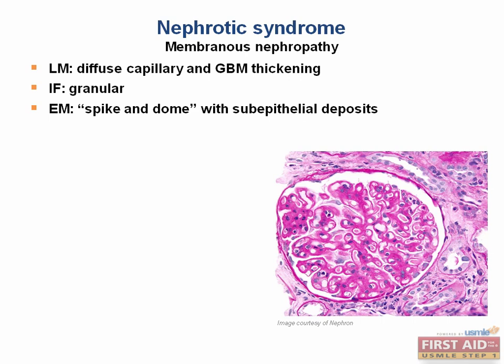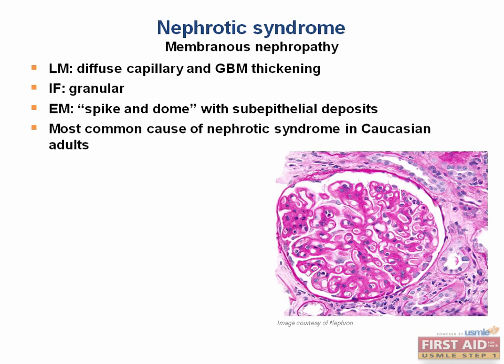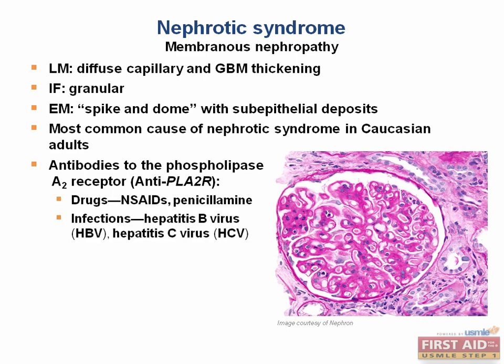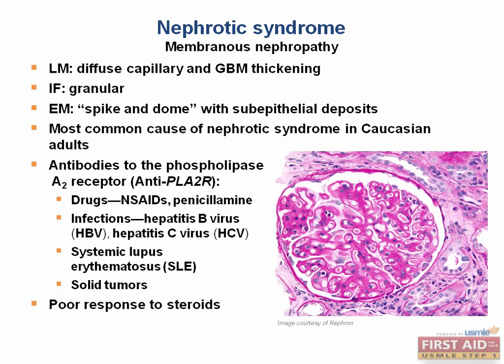Membranous nephropathy is the most common cause of nephrotic syndrome in Caucasian adults. Patients may have autoantibodies to the phospholipase A2 receptor. It can also be caused by a number of drugs, infections, lupus, and even cancers. It responds poorly to steroids.